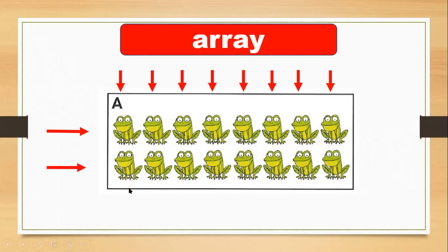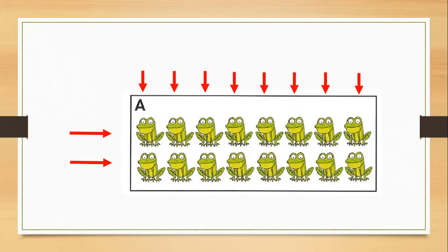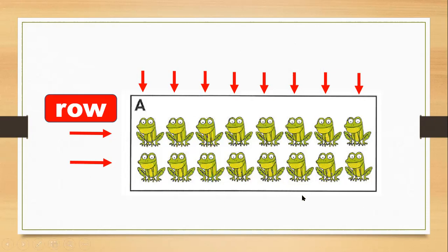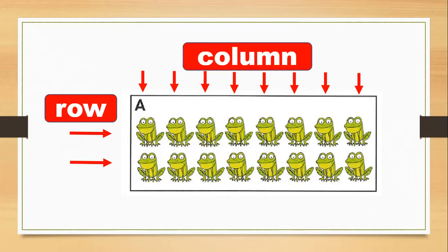So to summarize: how many rows? Two rows — from left to right. And how many columns? Eight columns, and each column has two frogs.